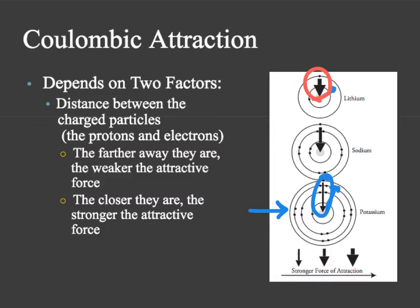So the distance between the protons and the electrons is going to help drive the attraction between the two and help us see how certain atoms are going to either hold their electrons more tightly or allow those electrons to be lost. We're going to see how this Coulombic attraction is going to drive most of the periodic table trends that we discovered in breaking the code.